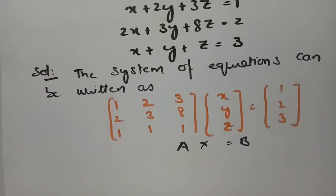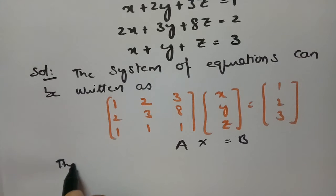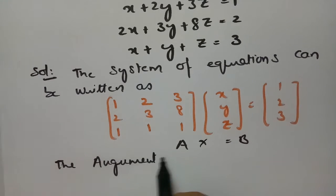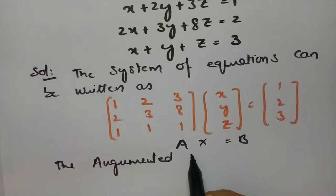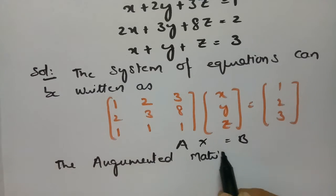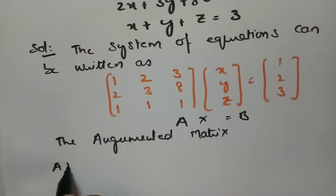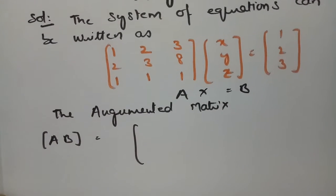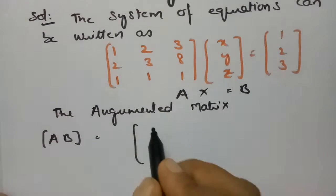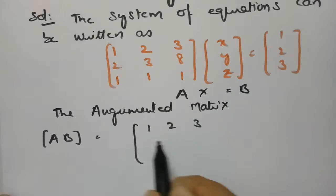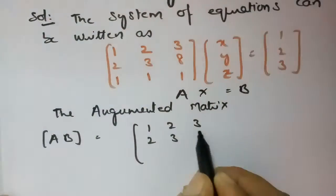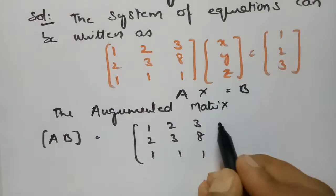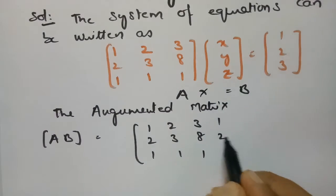Now we have to form the augmented matrix [A|b]. The augmented matrix can be written as [A|b], where the rows are 1, 2, 3 | 1 and 2, 3, 8 | 2 and 1, 1, 1 | 3.